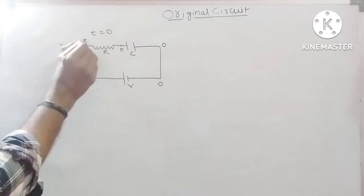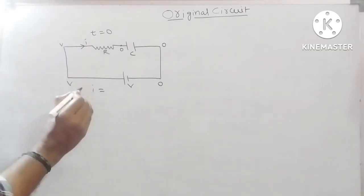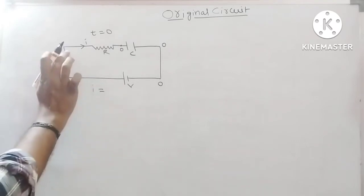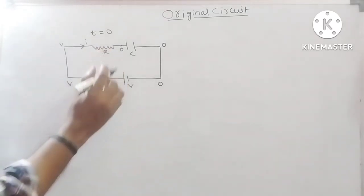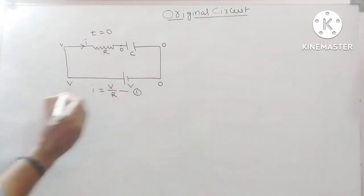When current passes through the circuit, I can be represented as I is equal to potential difference V minus 0, which is V, divided by resistance of the resistor R. This is the first equation.